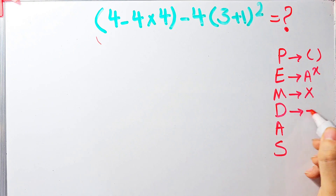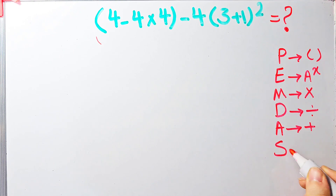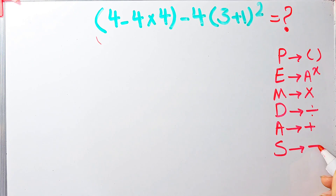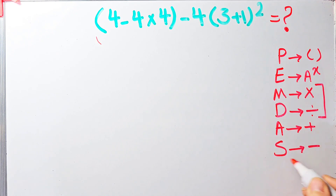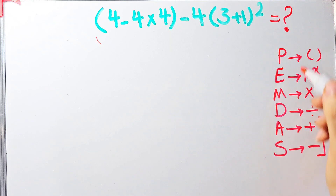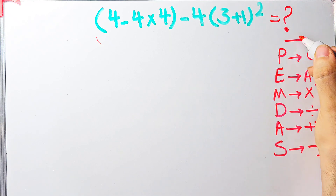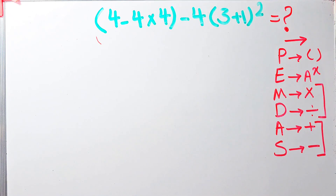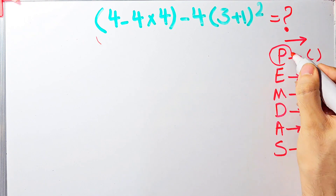D stands for division, A stands for addition, and S stands for subtraction. Multiplication and division have the same level of priority; addition and subtraction also have the same level of priority. When we have both in an expression, we start from the left. According to the PEMDAS rule, first we simplify the parenthesis.